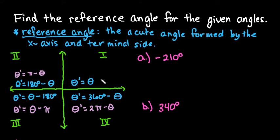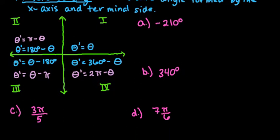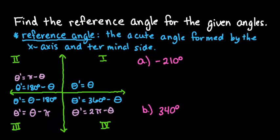Hi, for this video what I want to do is show you how to find the reference angle for the given angles. I have given two angles in degrees and two angles that are in radians so that you can see finding reference angles in both forms.